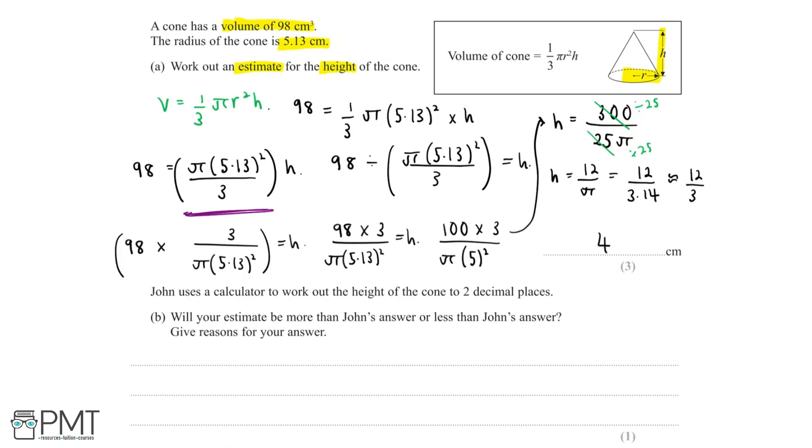Part A is worth 3 marks. So let's take a look at where these 3 marks are allocated. The first mark is for substituting the values that we were given into the formula for the volume of the cone and for beginning to rearrange this to find the height, which we've done over here. We said 98 divided by π (5.13)² over 3 is equal to height.